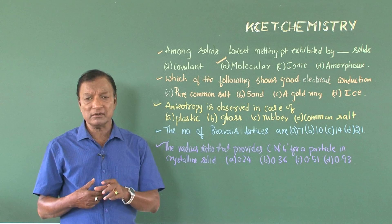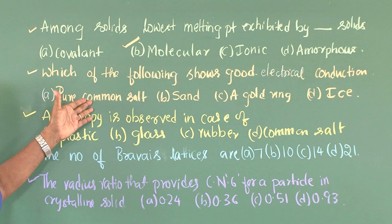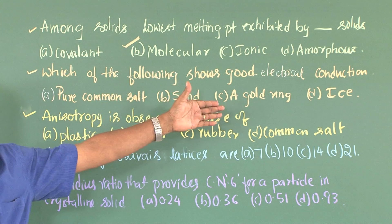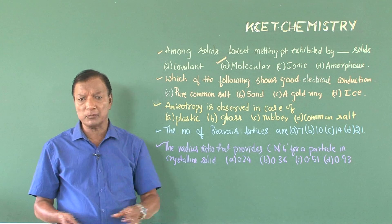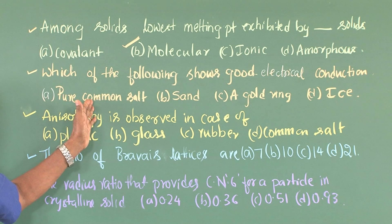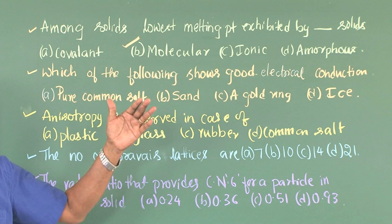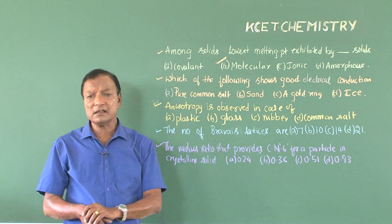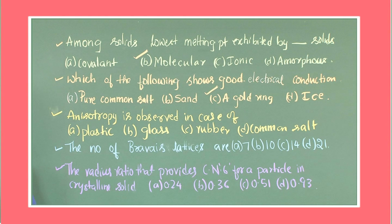Therefore, sometimes we may find a little bit confusion like as to pick up the pure common salt or a gold ring. Pure common salt is a solid where the particles are held in fixed positions and the ions are unable to move, so electrical conduction cannot be observed. While in the gold ring, the metallic solid, electrical conduction is observed. Sand and ice are the covalent and molecular crystalline solids; they also do not possess this property. Thereby our option comes with the gold ring, that is C.